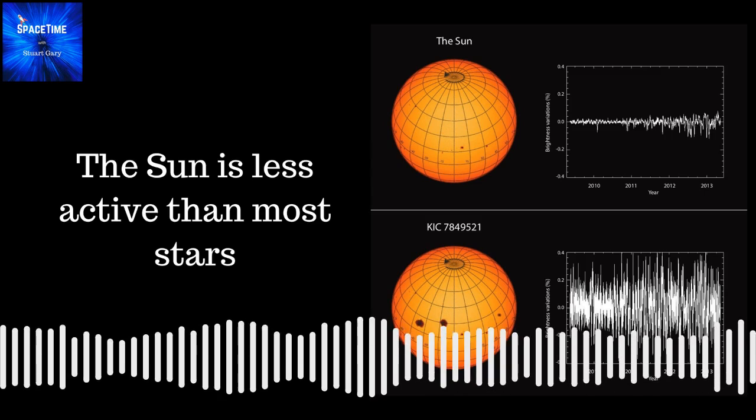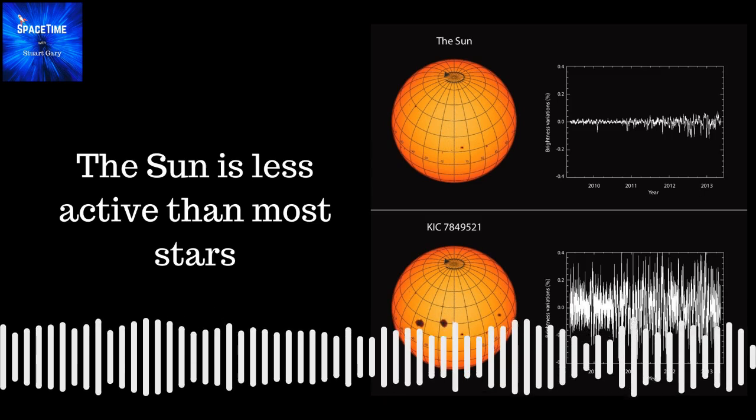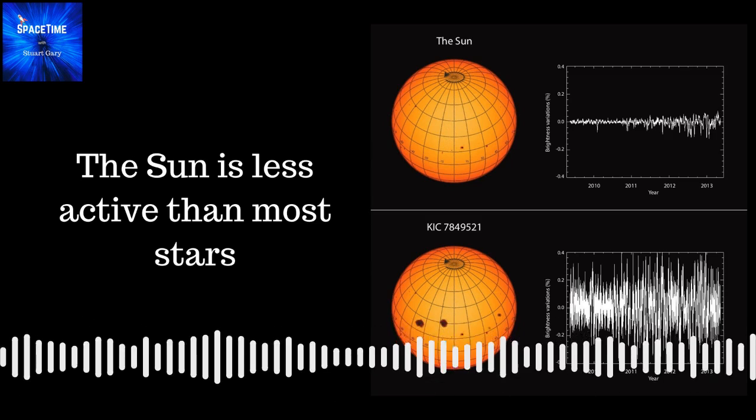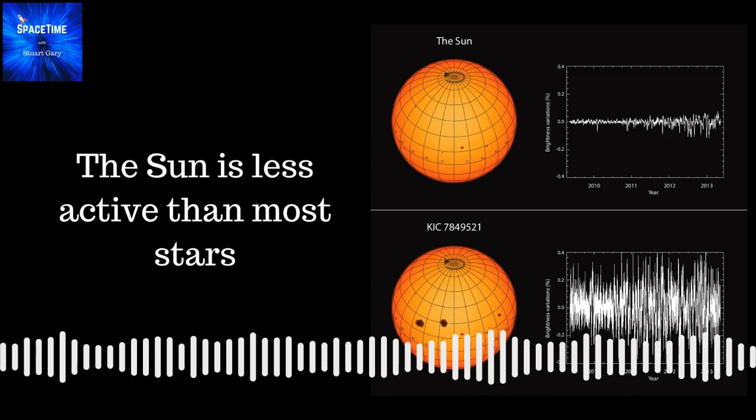You see, the speed at which a star rotates around on its own axis is a crucial variable. That's because the star's rotation contributes to the generation of its magnetic field through an internal dynamo process.